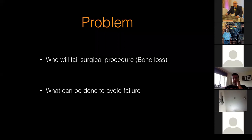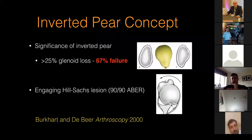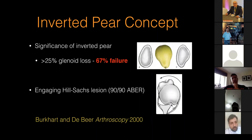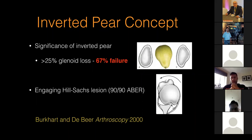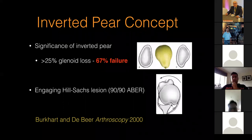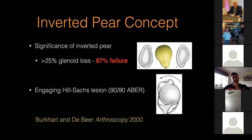The most cited shoulder paper is probably this one from Burkhart and Beers, where they looked at just over 160 patients. Most of them were contact athletes, to see what's happening. They did arthroscopic repair and found two things: patients who had more than 25 percent of glenoid bone loss had a failure rate of about 70 percent.